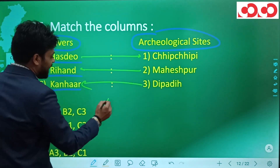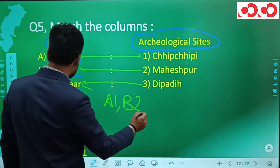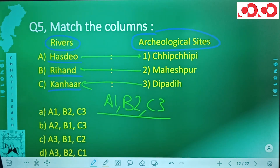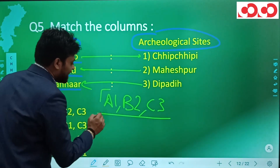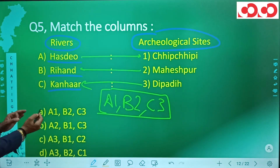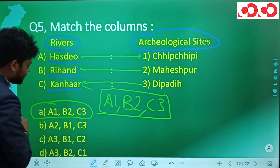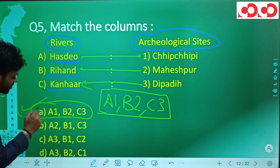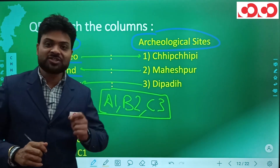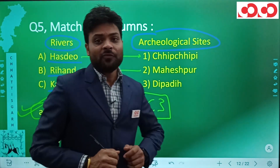So matching: Hasdev with Chipchipi (A1), Rihand with Maheshpur (B2), and Kanhar with Deepadi (C3). Checking the options, option A gives A1, B2, C3. Hence option A is the correct answer for question five.